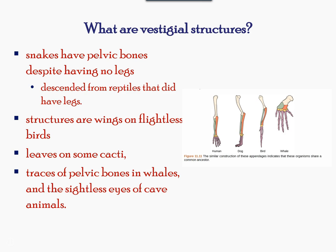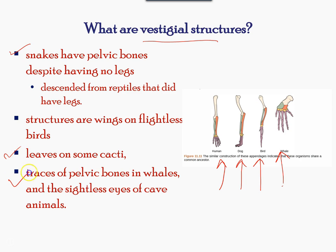Another type of evidence is found in unused structures called vestigial structures — remnants of structures that were once used for function. For example, snakes have pelvic bones but no legs. Humans have an appendix, a tissue that extends from the large intestine but has no known function. Leaves of cacti and pelvic bones in whales are also vestigial characteristics.